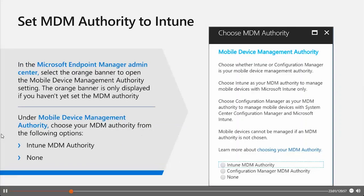What do we expect after we set or change the MDM authority? When the Intune service detects that the tenant's MDM authority has been changed, it sends out a notification message to all enrolled devices to check in and synchronize with the service. Even for devices that are powered on and online during this change, there will be a delay of up to eight hours depending on the timing of the next scheduled regular check-in. A user can quickly change to the new MDM authority by starting a manual check-in from the device to the service, easily done via the Company Portal app and initiating a device compliance check.